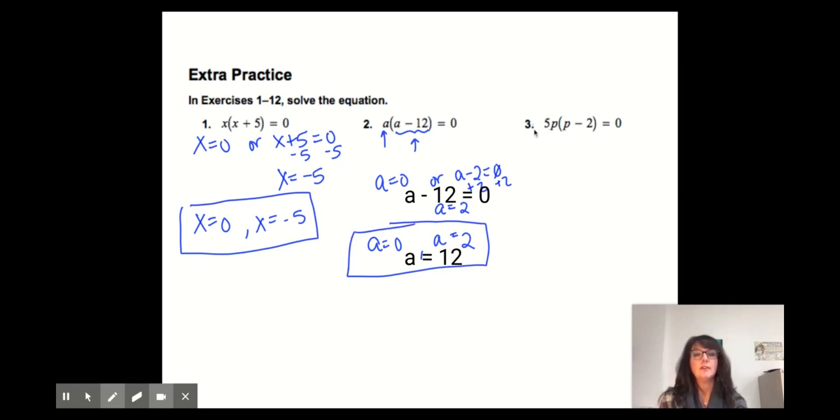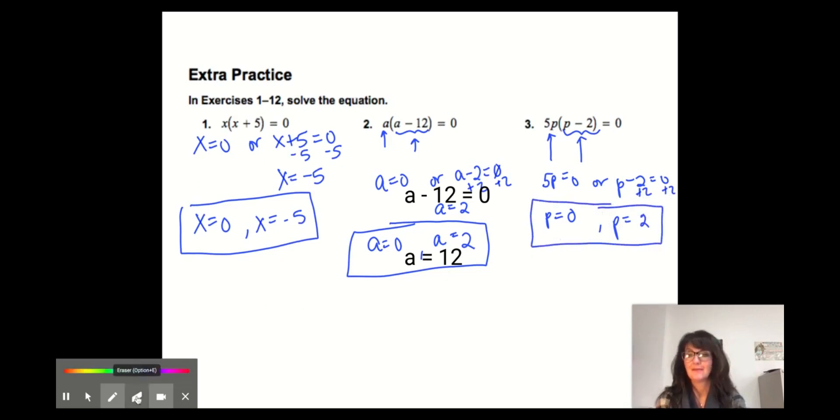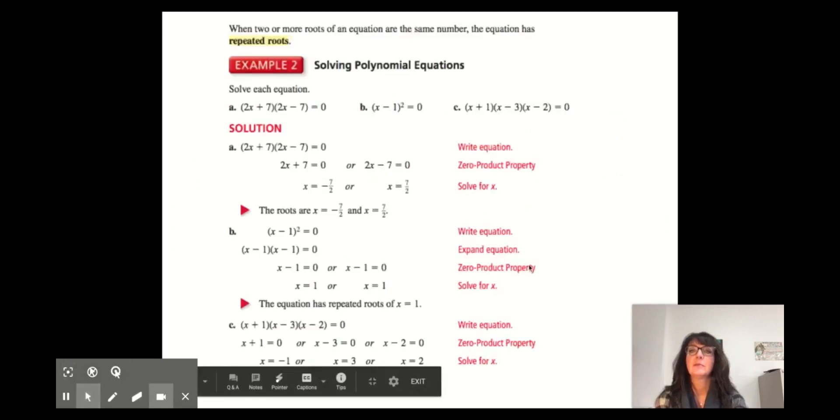And finally, we have 5p. So this is a factor, and p minus 2 is a factor. Two different factors. So either 5p is equal to 0 or p minus 2 is equal to 0. When we divide both sides by 5, we get p is equal to 0 here, because 5 times what equals 0 and the only answer is 0. Then we would add 2 to both sides, so we'll get p is equal to 2. Those are our roots.